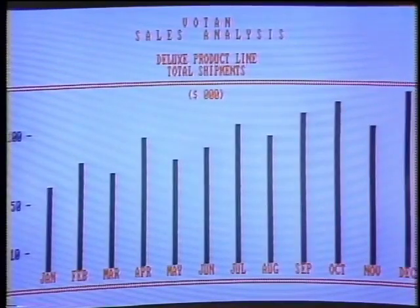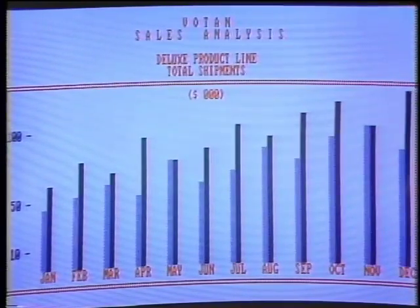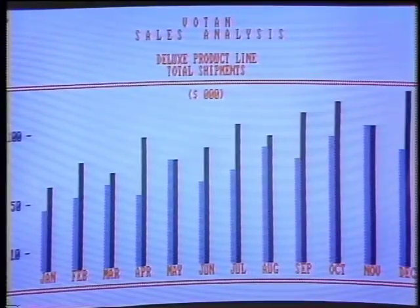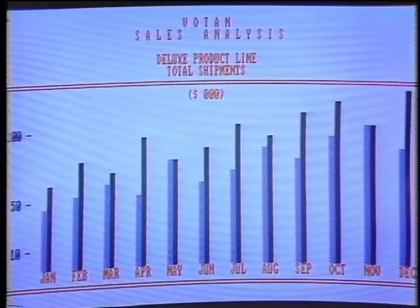Ron speaks voice commands to control a sales database: 'Executive... Sales... Deluxe... Total... Yes... Yes.' The system asks for a forecast growth percentage — he says 'Two, Five,' and the system responds: 'The boss will never believe that. Let's keep it under 20%.' He then says 'One, Nine,' and the system accepts the forecast. He commands 'Exit' to leave the application.